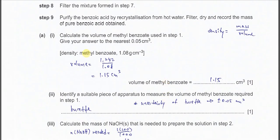Part A1: Calculate the volume of methyl benzoate used in Step 1, giving your answer to the nearest 0.05 cm³. Density is mass over volume, so volume equals mass over density. You should get approximately 1.11 cm³, and the answer rounded to the nearest 0.05 cm³ is 1.15 cm³.